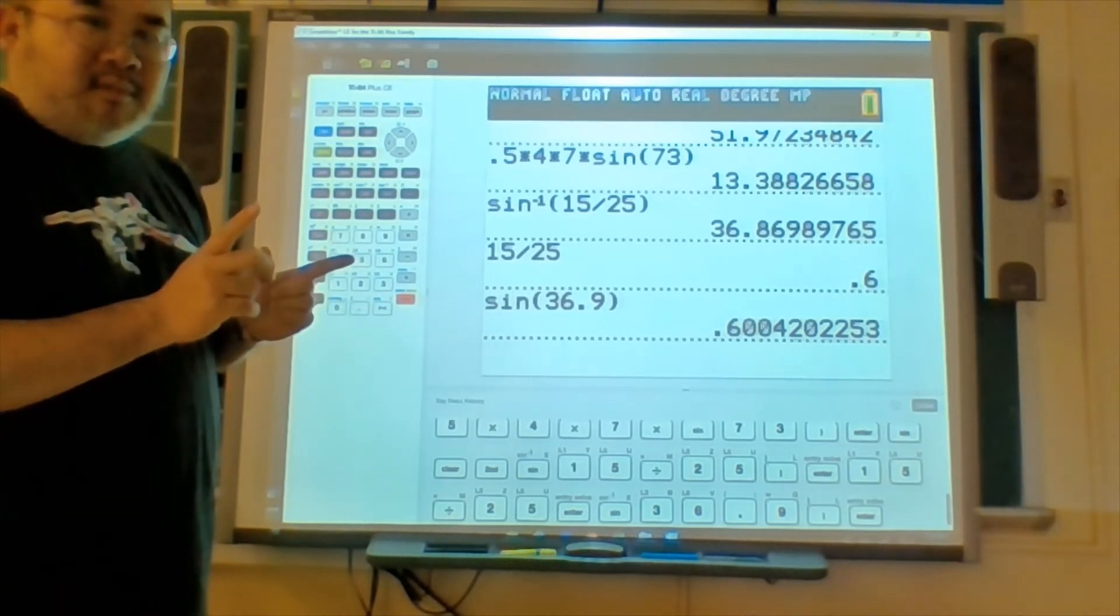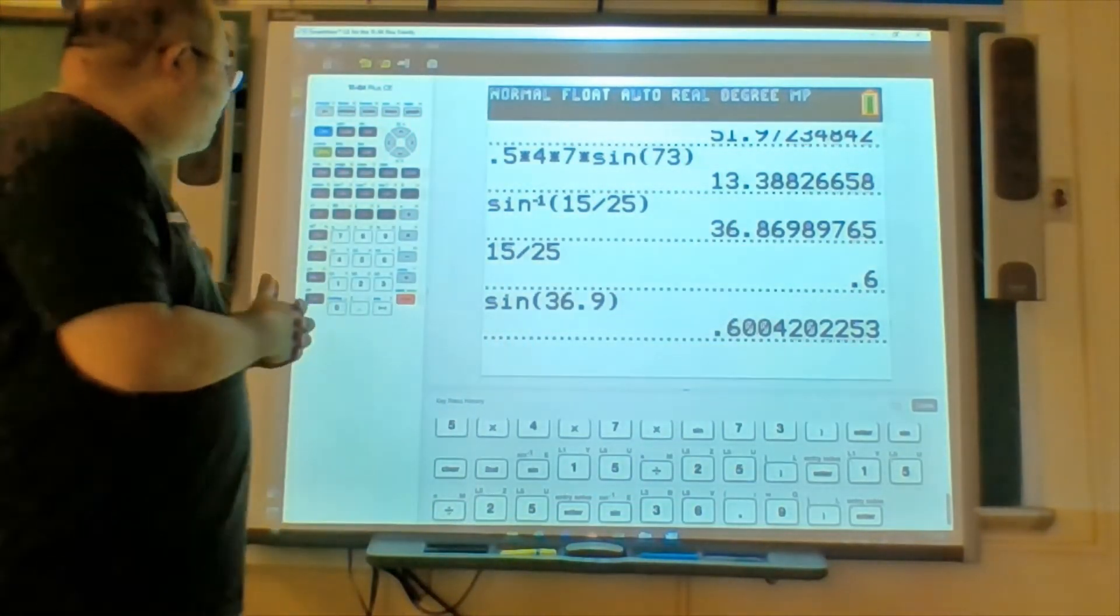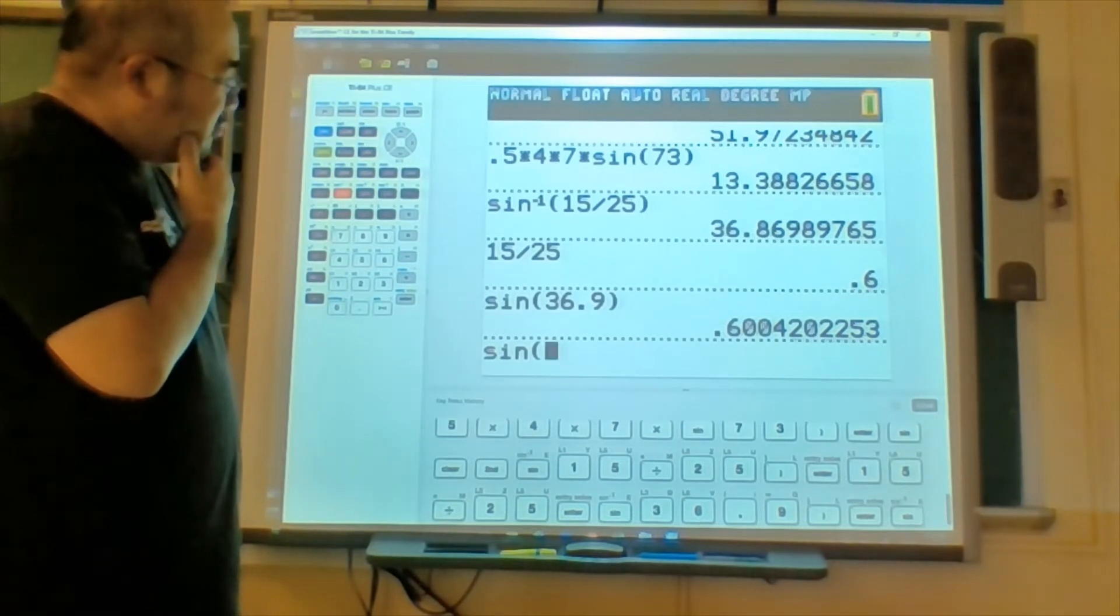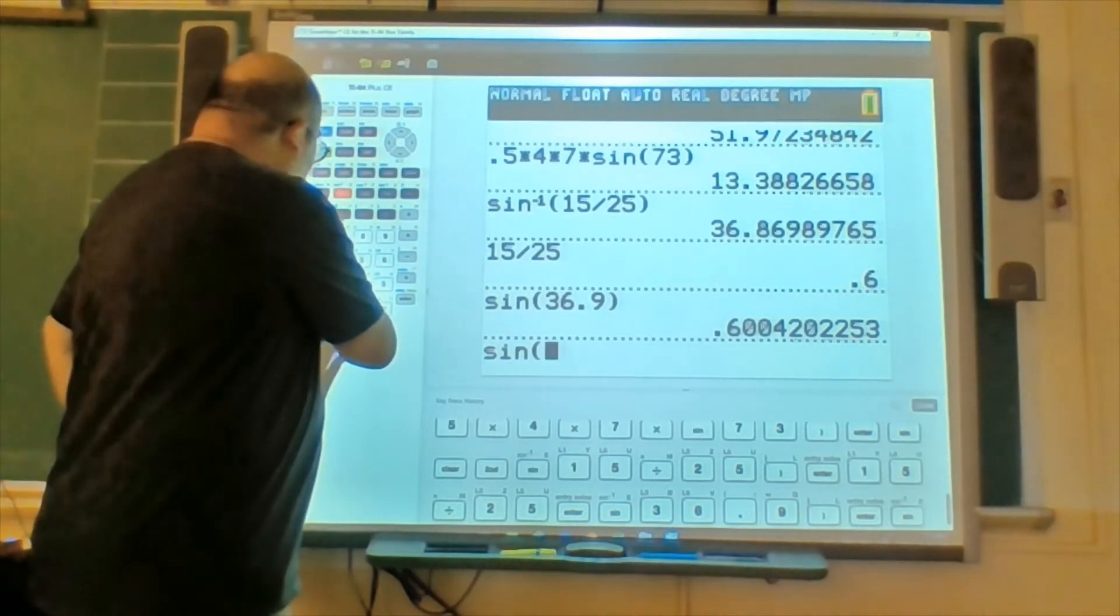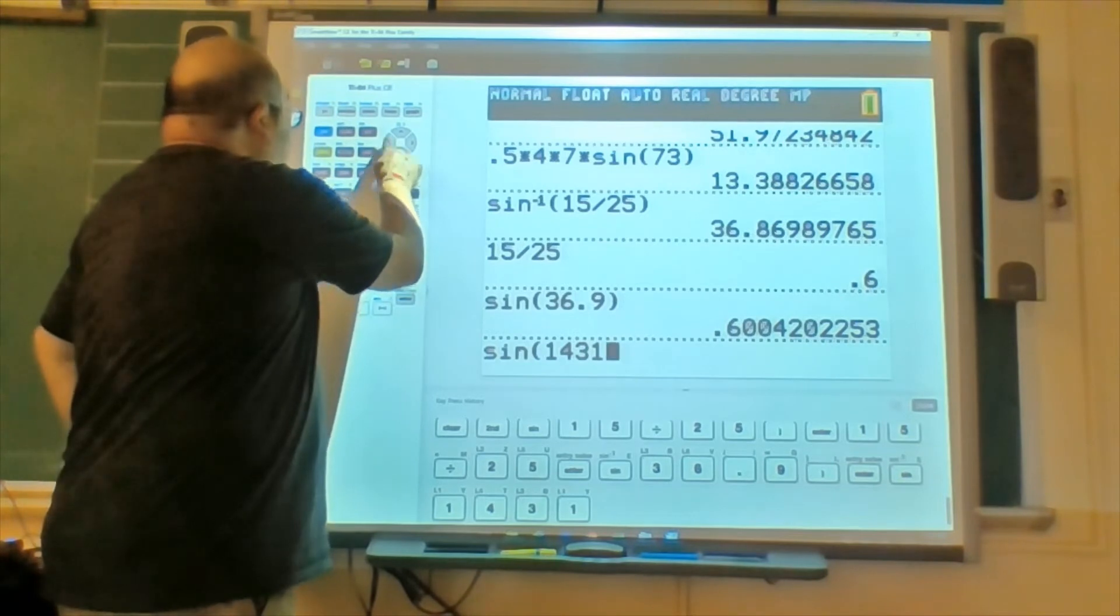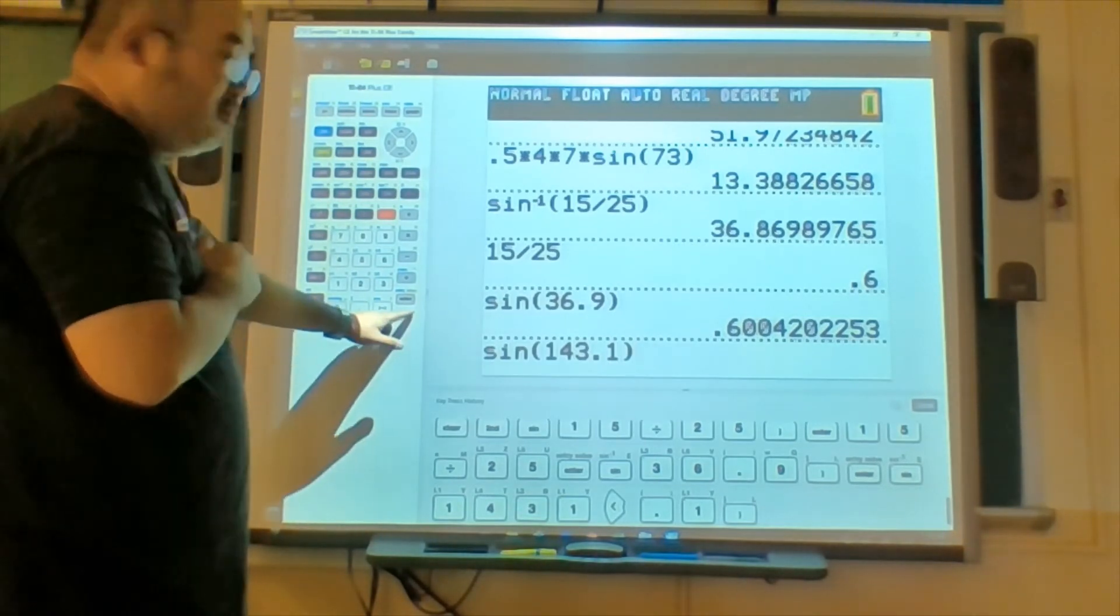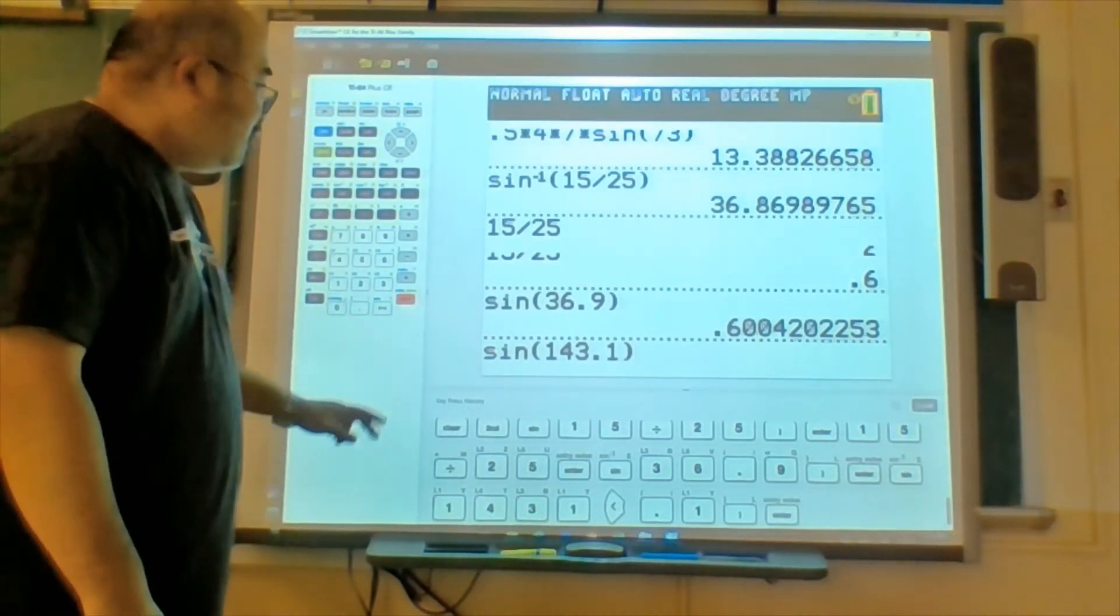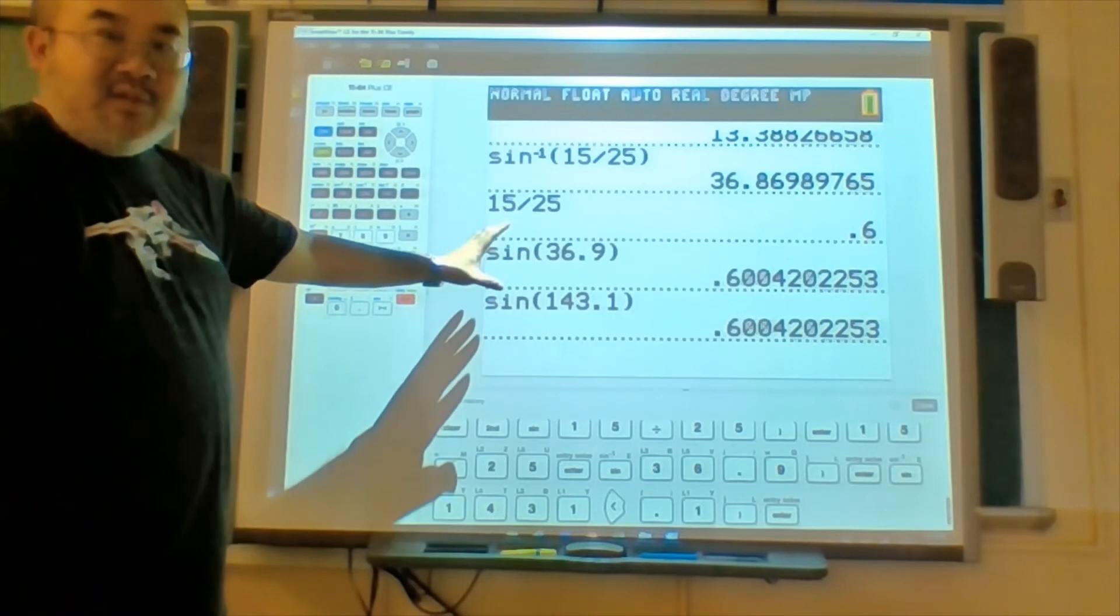Now, I said all angle measures. So, is there another angle measure that might work out to give us the same value? For example, maybe not 36.9, but let's say 143.1. Hmm, let's see. You might say, how did you get this number? Well, first off, let's see if the number works. Oh my goodness, the same exact number, but different angle measures. What is the relation between these angle measures?